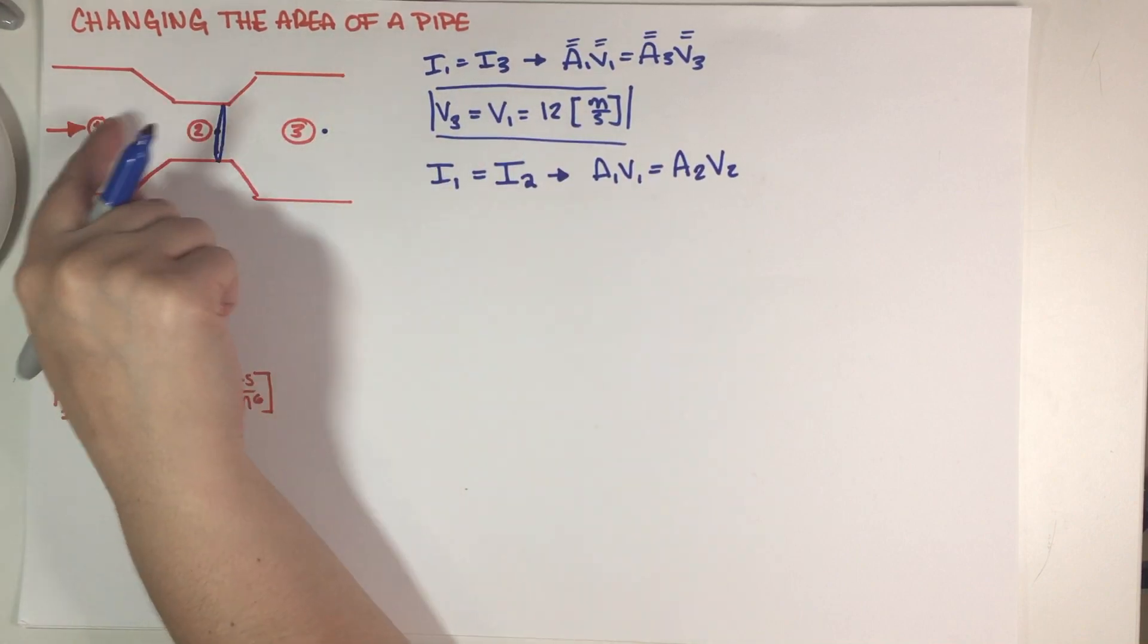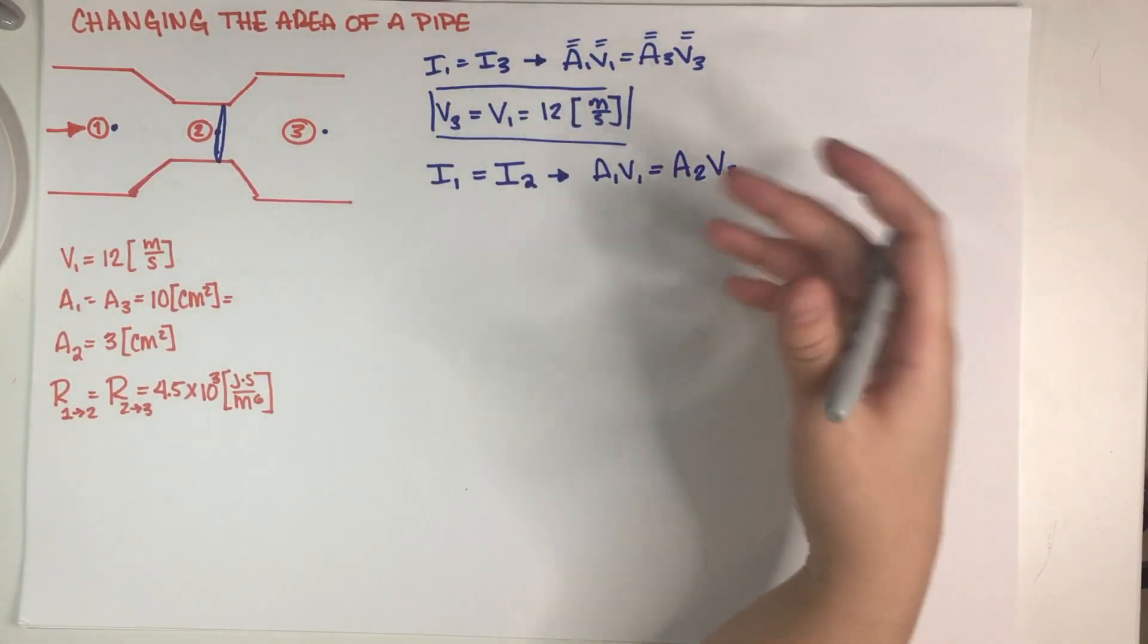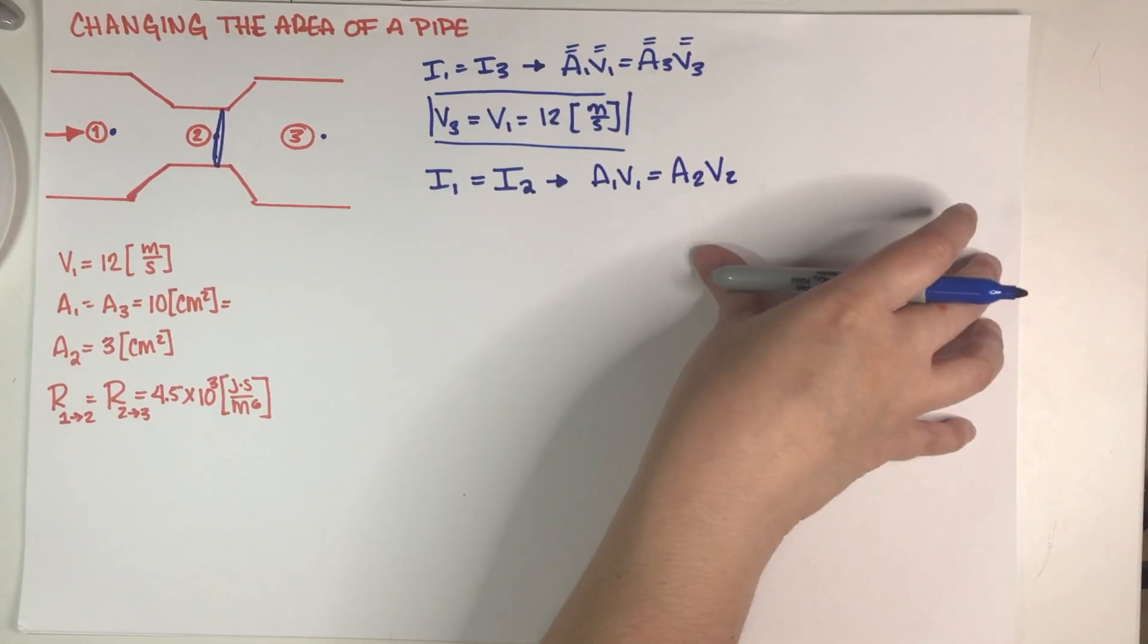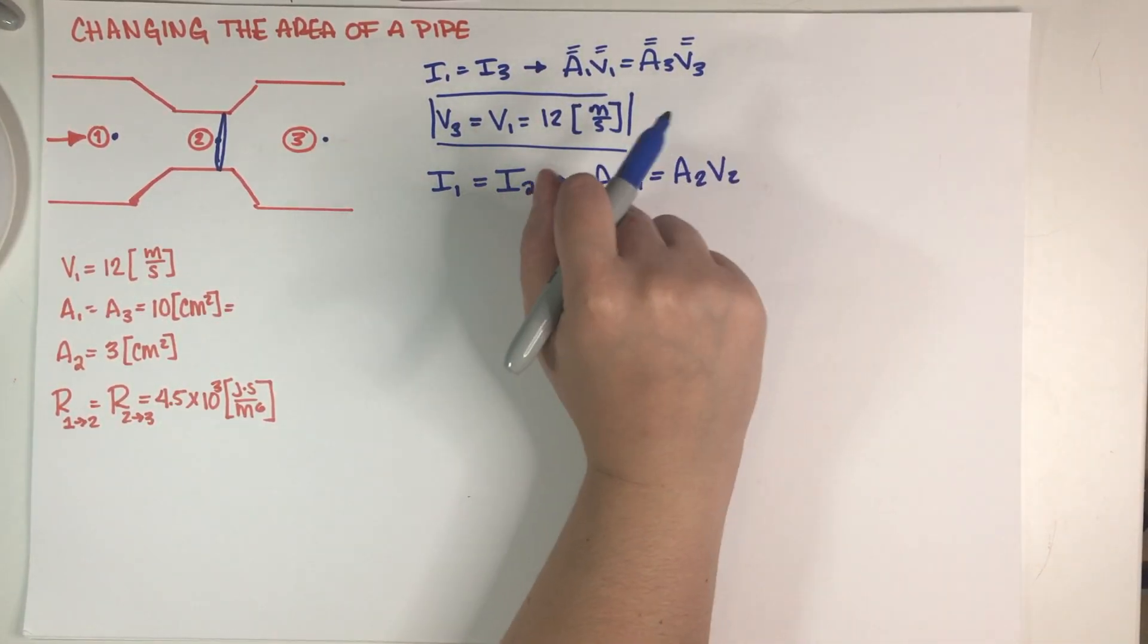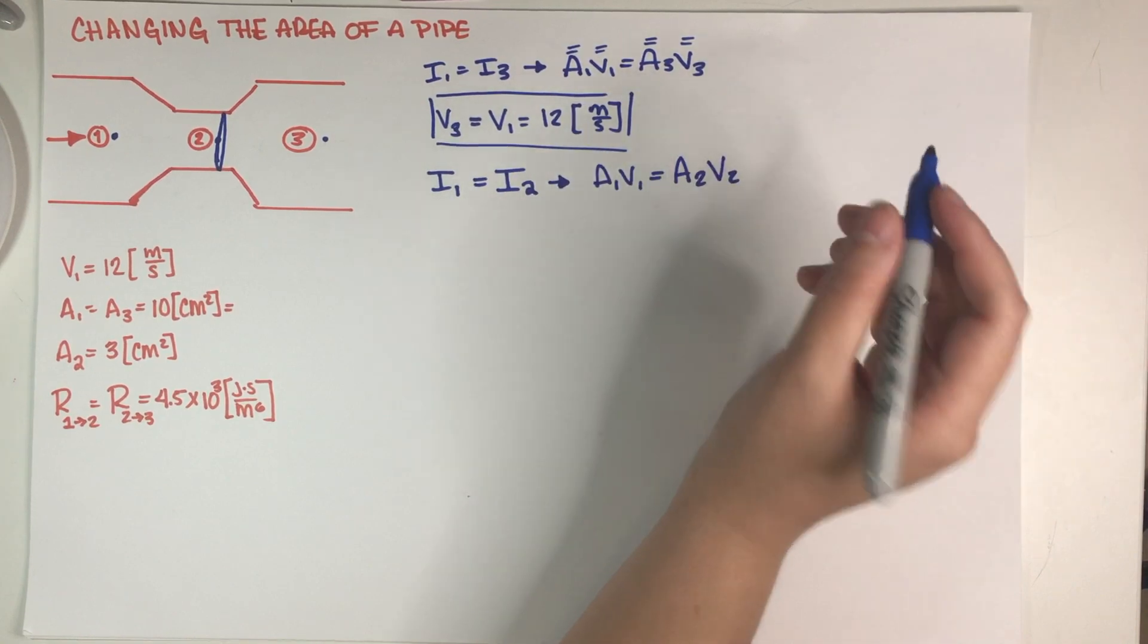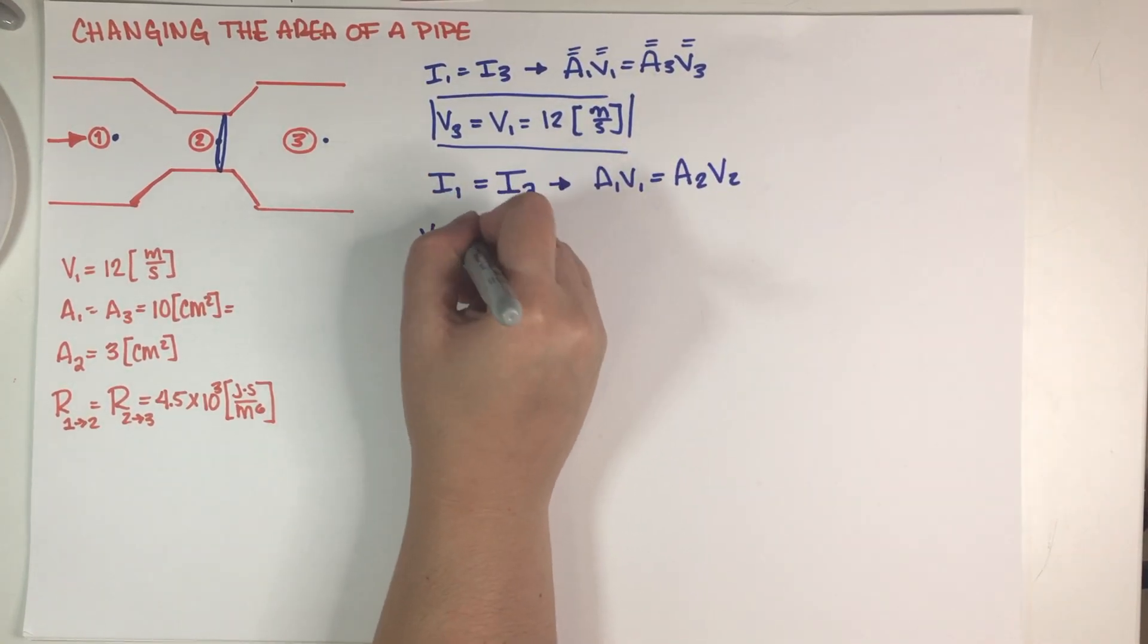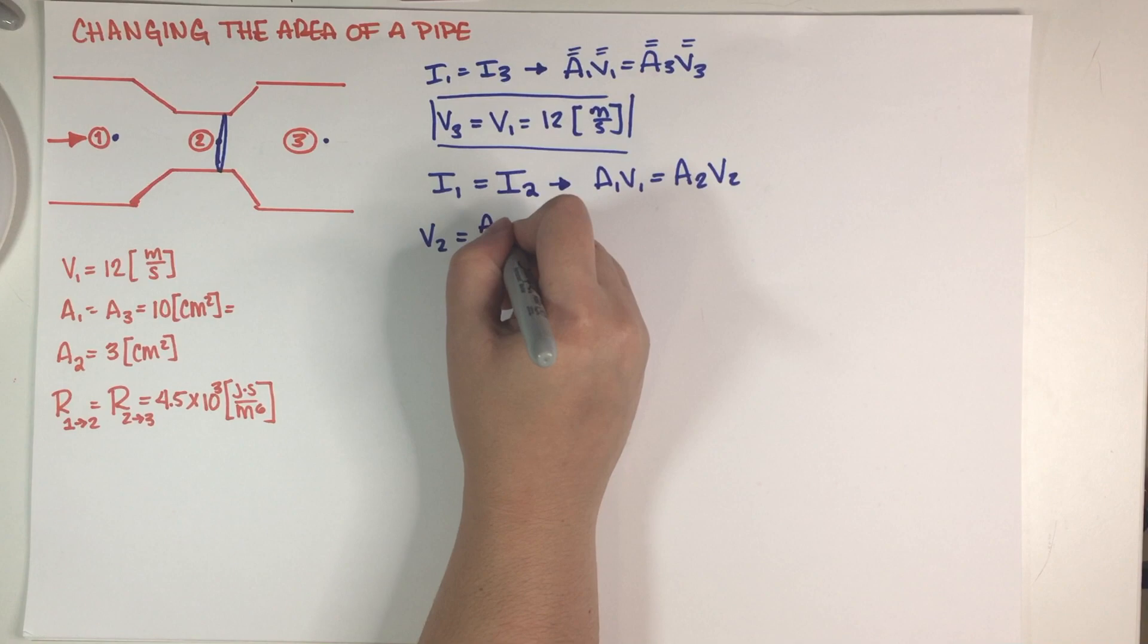This means that area 1 velocity 1 should also be equal to area 2 velocity 2, because we need continuity here, here and here. This is the exact same tube and this is the exact same air flowing from left to right. So we have these two and we can figure out these two, so V2 is equal to area 1 velocity 1 divided by area 2.